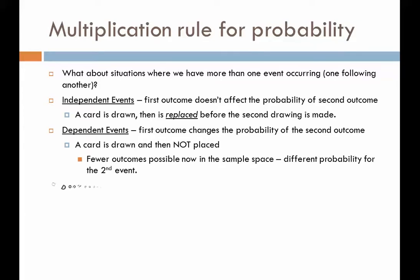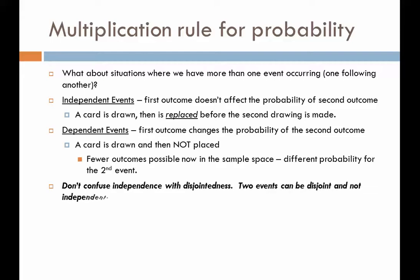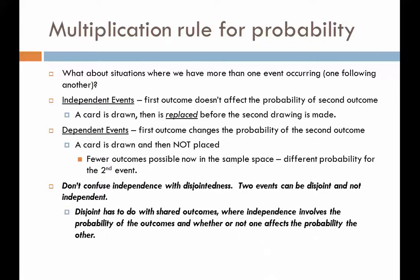One thing we don't want to do is confuse independence with disjointedness — these are really two different concepts. When we talk about independence of events, we're talking about probability and whether one event will affect the other. When we talk about disjointedness, we're talking about shared outcomes of single events where one trial occurs but there are multiple ways to be successful, and we need to look at whether those two events have any shared outcomes. Independence deals with one event followed by a second and whether the probability of the first affects the probability of the second.